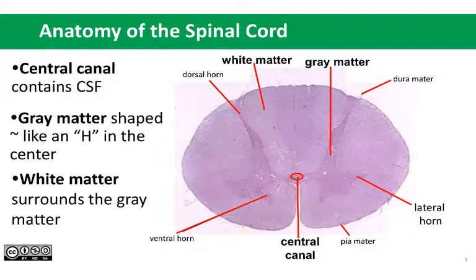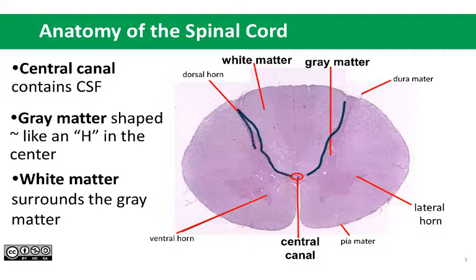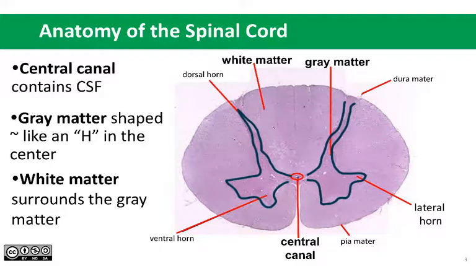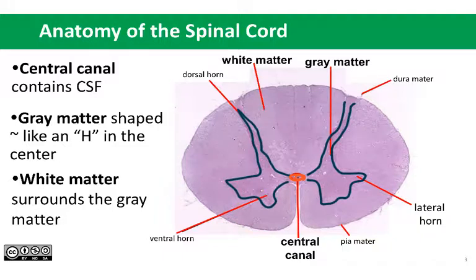Looking at the anatomy of the spinal cord, the first thing you notice is that the gray and white matter are flipped relative to their organization in the brain. The gray matter is on the inner part of the cord and the white matter is on the outer edge. The gray matter area is described as looking like an H or a butterfly. You can also see the central canal, which is an extension of the ventricles of the brain and is full of cerebrospinal fluid, and the pia mater, which outlines the cord.